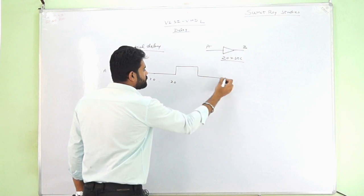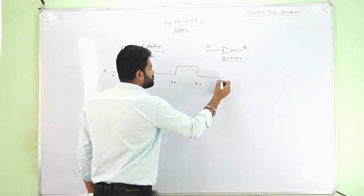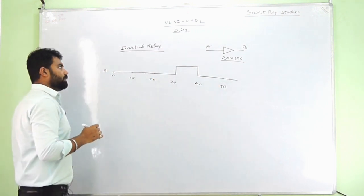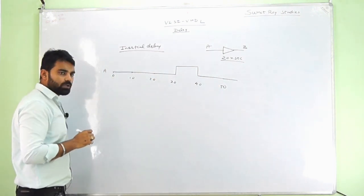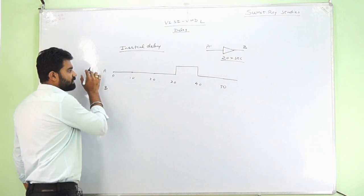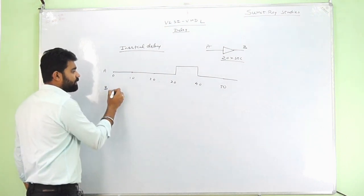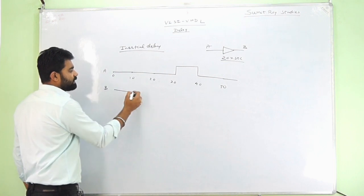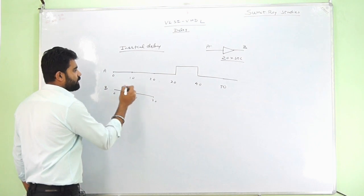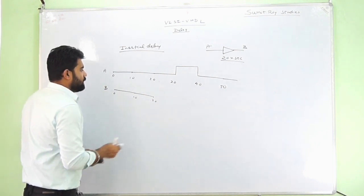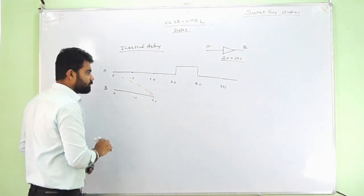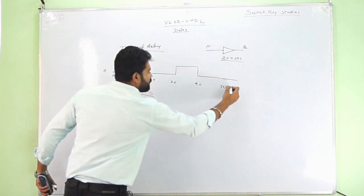An event occurs at 40 nanoseconds, 50 nanoseconds, and so on. As it is an inertial or default delay, the output B will be: whatever is at minus 20 nanoseconds will be transferred here. Whatever is at minus 10 nanoseconds will be transferred at 10 nanoseconds. At 20 nanoseconds, whatever is available will be transferred, because the input is the same as the output but after 20 nanoseconds.